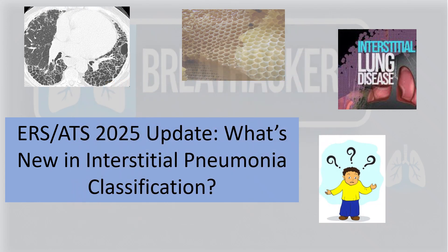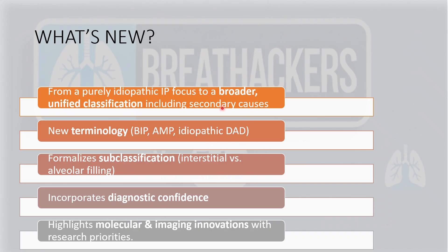The topics we'll be covering in detail include a change in focus from purely idiopathic IP to a broader unified classification including secondary causes. There is addition of new terminologies like BIP — bronchial centric interstitial pneumonia — AMP — alveolar macrophage pneumonia — and idiopathic DAD — diffuse alveolar damage. They have also formalized subclassification of IP as interstitial or alveolar filling disorders, incorporated diagnostic confidence, and highlighted molecular and imaging innovations with research priorities.